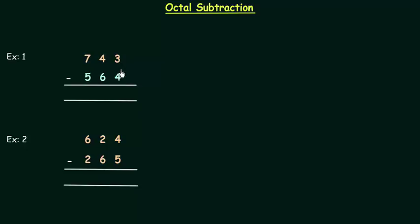We have 3 and 4. 3 is smaller than 4 so we have to take borrow from the next position. When we take borrow in case of decimal number system it is 10. When we take borrow in binary number system we have 2. So this implies when we take borrow in octal number system it should be 8 because base in case of octal number system is 8.